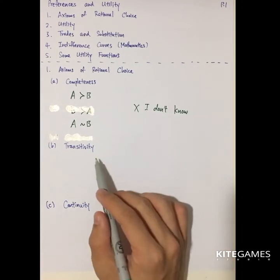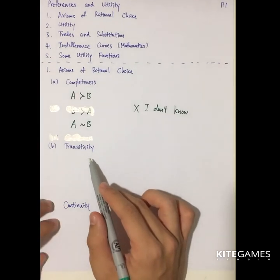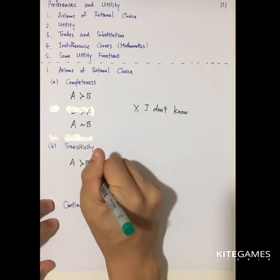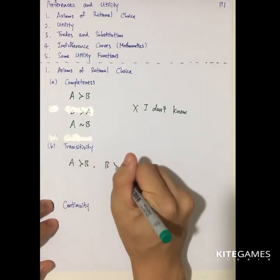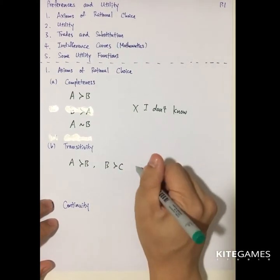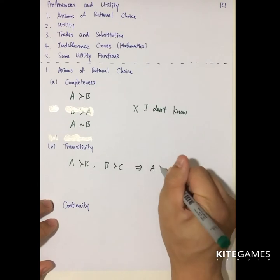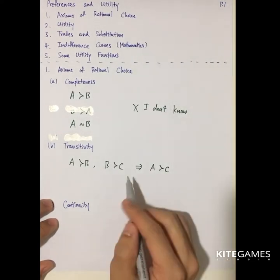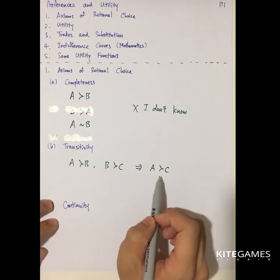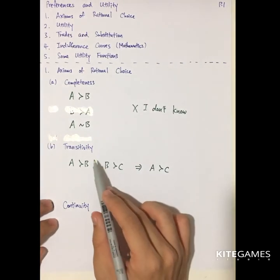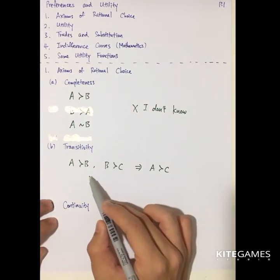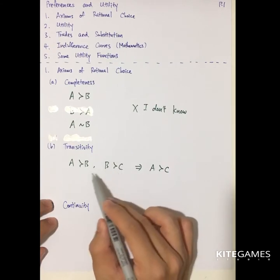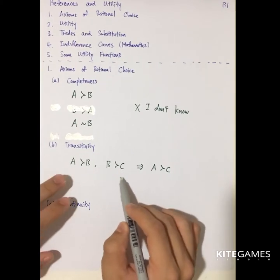The second assumption is transitivity. Transitivity means that if you say A is better than B and B is better than C, then A is better than C. If you say C is better than A, then you are not transitive. Transitivity means there exists a bridge that allows comparison between two bundles.